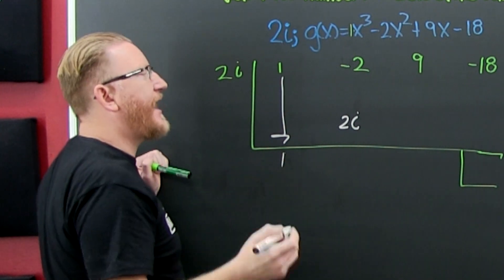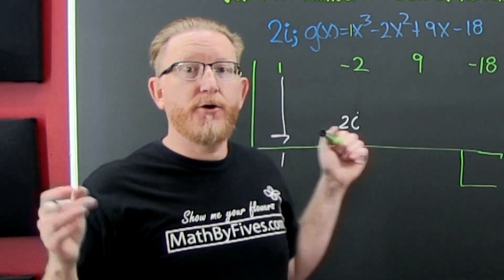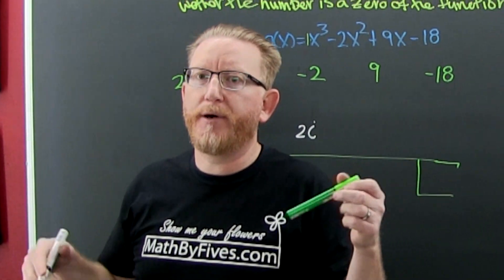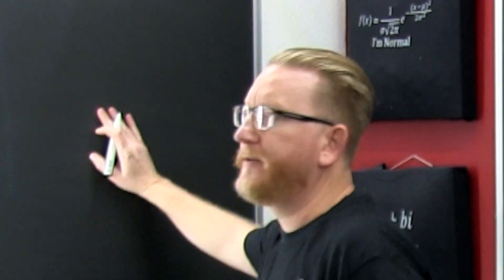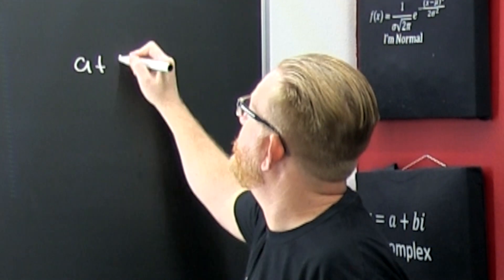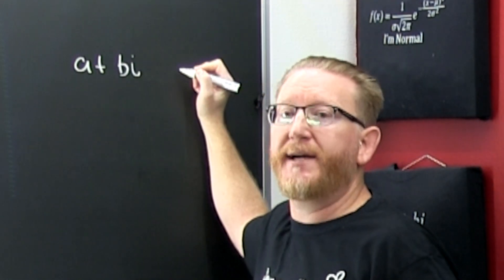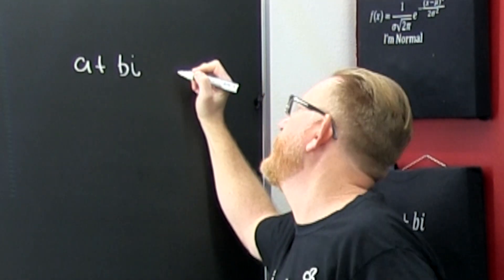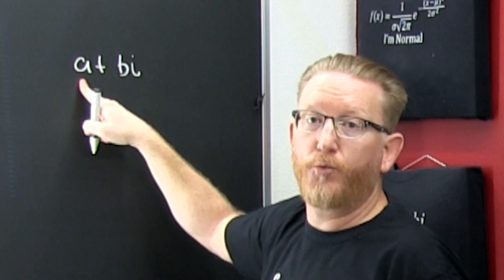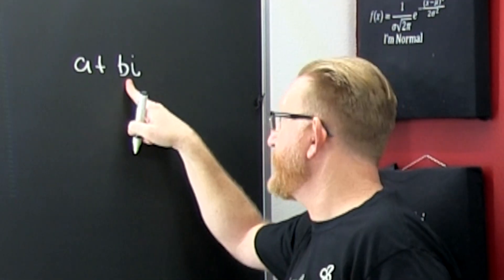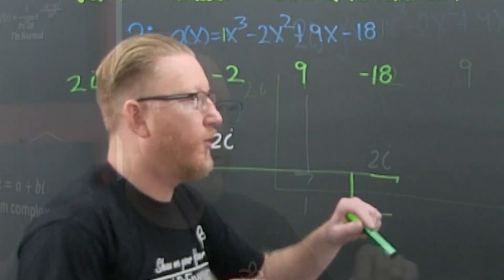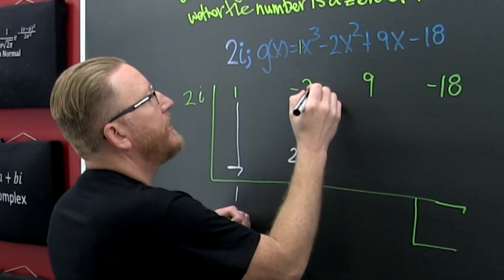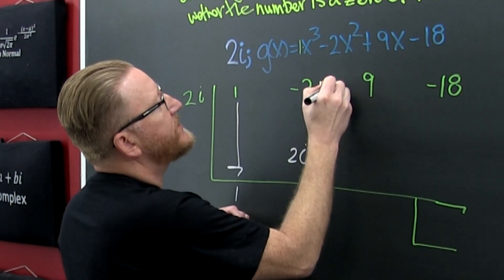So that's going to be a one times a 2i, which is 2i. Then I have to add their real parts and their imaginary parts. We can go up here — a plus bi. That's the complex form. So a is the real part and b is the imaginary part. So this is plus 0i.